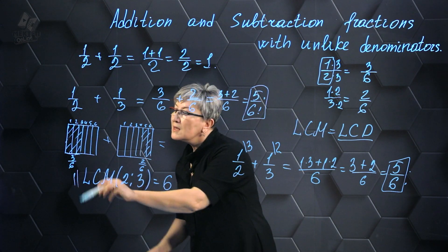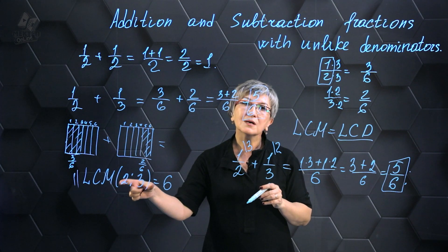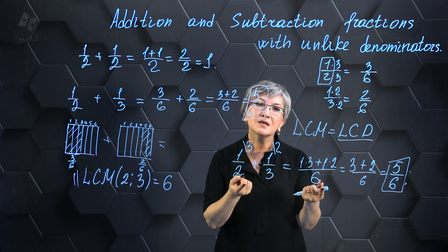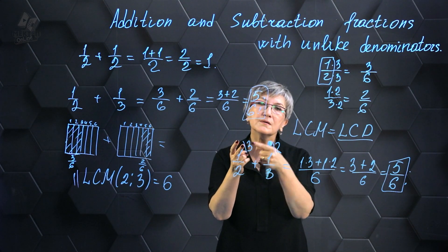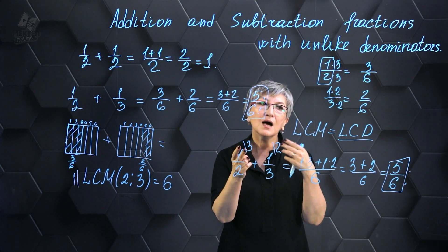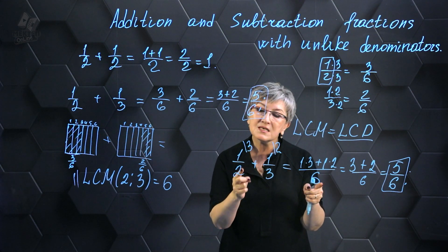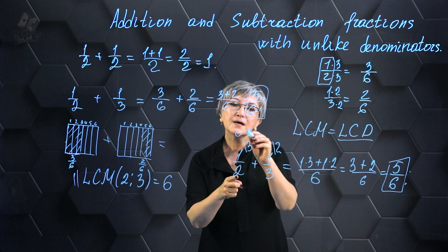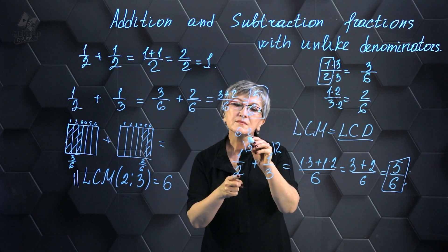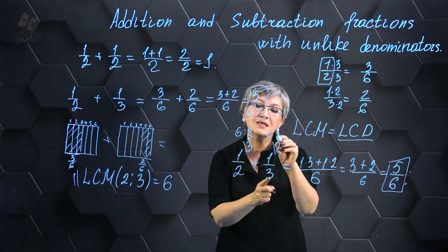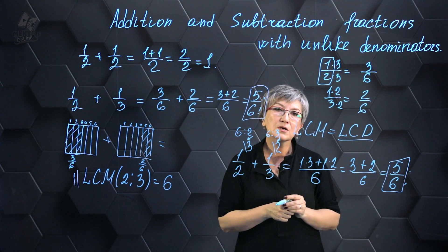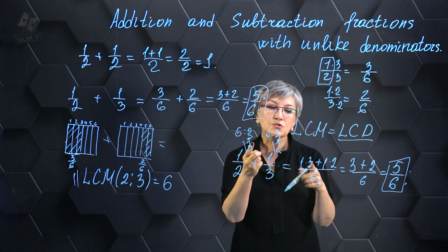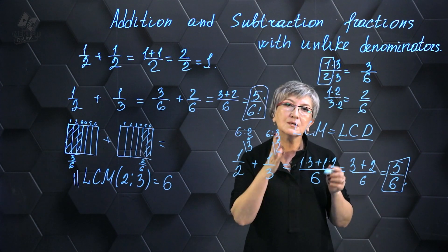The initial step: we determine the least common multiple or least common denominator for the two denominators. Proceeding to the next step, we find additional factors by dividing the common denominator by each of our individual denominators. How did I get 3? That's 6 divided by 2. Then I performed 6 divided by 3, which resulted in 2. Then I multiplied: 1 times 3 plus 1 times 2 to get the final result.